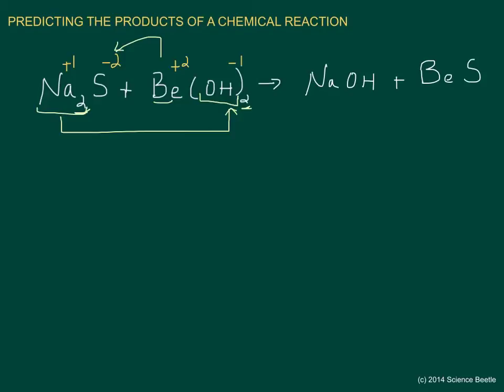Now that we've got this, we need to identify the charges and transfer them. It's plus one for sodium, minus one for hydroxide, beryllium is plus two, sulfur is minus two. Once we've done this, we ask ourselves are the compounds neutral.